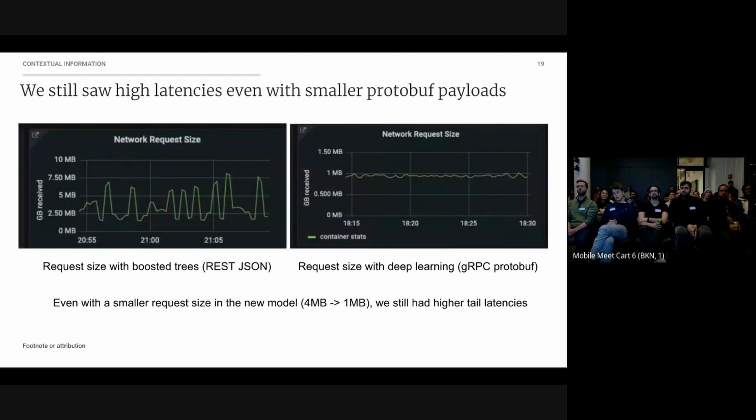So even with all of that, we were still kind of confused. We saw high latency even with small protobuf payloads. So over here on the left, we have the network request size for gradient boosted trees in our old models. This is REST with JSON. So this is just serialized JSON payloads. Classic REST. On the right, we have the request size with our deep learning models, which now use protobuf, binary payloads with gRPC. Binary ones, one megabyte, these spike up to almost eight megabytes at times. But still, we saw higher tail latencies, specifically like our P99 latency was still much higher for deep learning models.